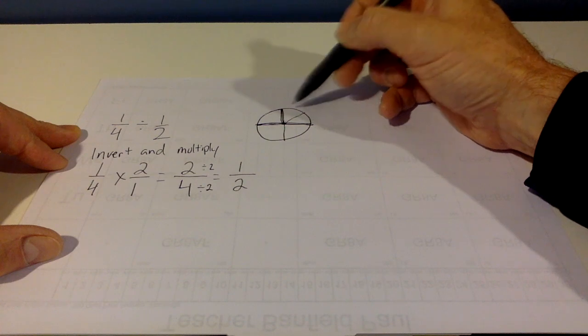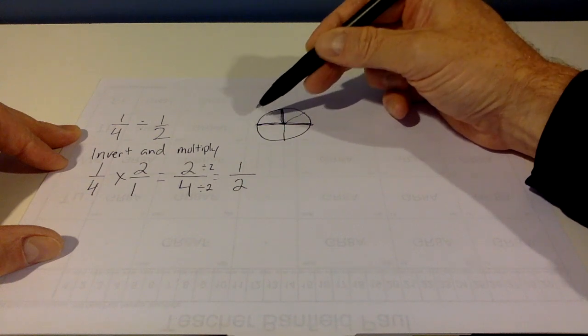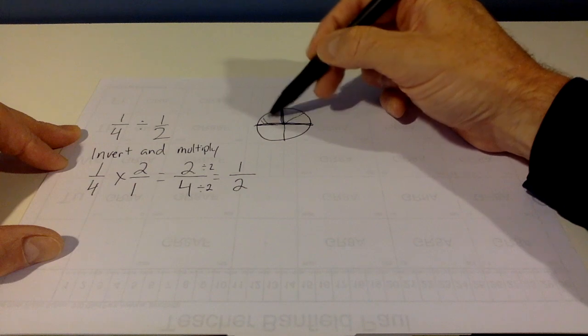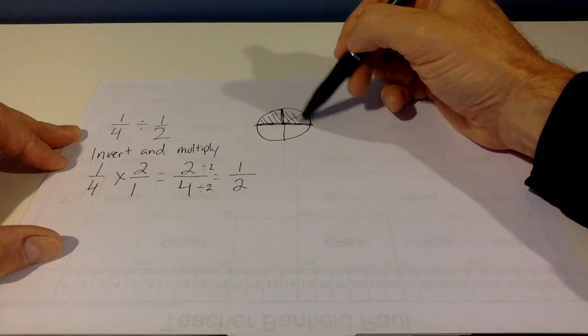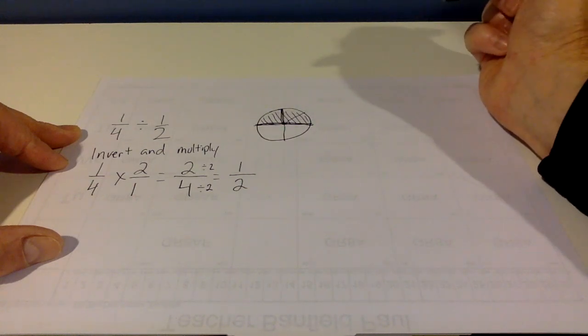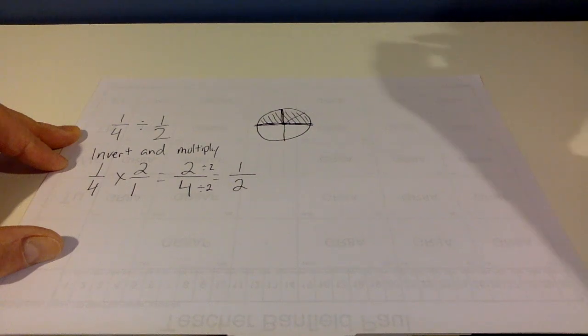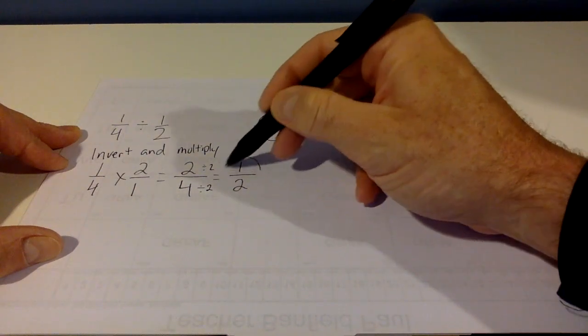It should go twice as big. So over here, which is 1 half of our pie or cake or pizza or what have you.